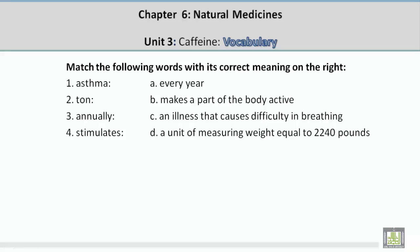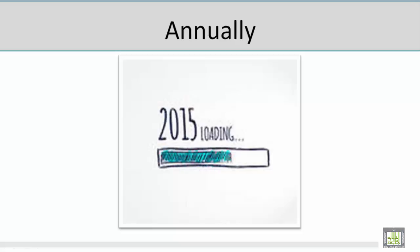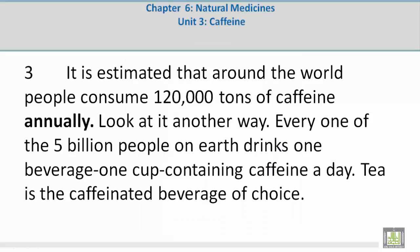Vocabulary word 3: Annually. The correct meaning is A — every year. Mohamed describes a picture showing 2015 loading, explaining that every year we move to a new year — that's what annually means. In context: 'It is estimated that around the world, people consume 120,000 tons of caffeine annually.'